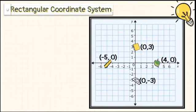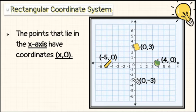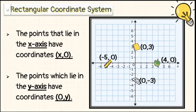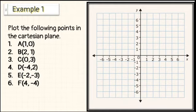There are also points which lie on the x and y axes. The points that lie on the x-axis have coordinates (x, 0), and the points which lie on the y-axis have coordinates (0, y), where x and y are real numbers.